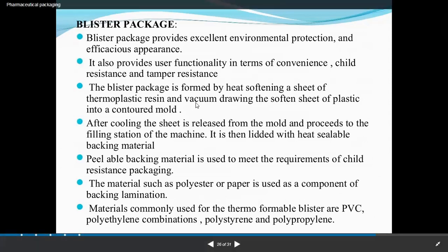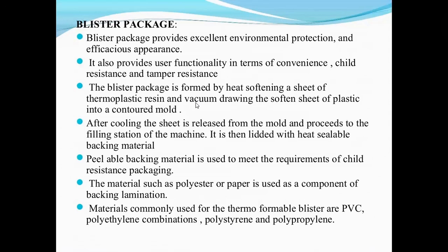Blister packing provides excellent environmental protection, efficacy, and appearance. It also provides user functionality in terms of convenience, child resistance, and tamper resistance. The process involves heat softening a sheet of thermoplastic resin in a contoured mould. After cooling, the sheet is released from the mould and lidded with heat-sealed backing material. Peelable backing material is used to meet the requirements of child-resistant packaging. Materials such as polyester or polyethylene, and polyester or polypropylene combinations are used.